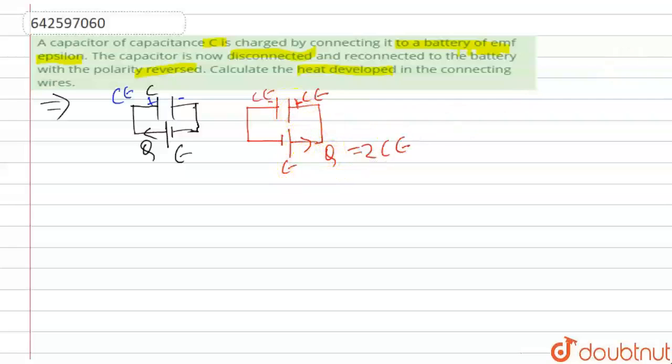Now see, what would be the work done by the battery here? Work done by the battery is Q into V. Now in place of Q, I will write 2C epsilon into V is again epsilon. So the total work done by the battery is 2C epsilon square here in this case.